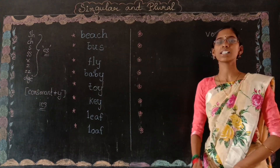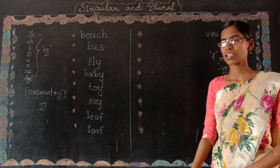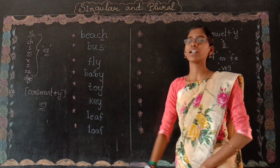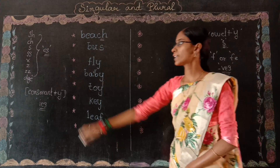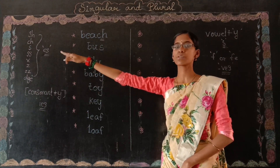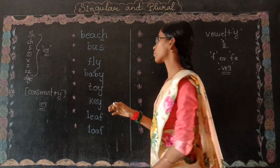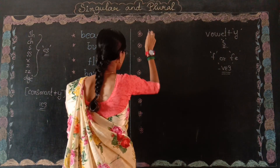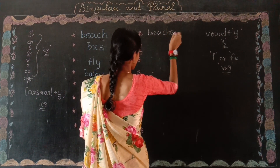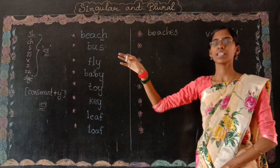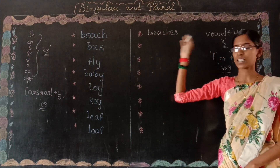See here, the first word is 'beach.' The word beach ends with CH. So according to our first rule, if a word ends with CH, you have to add ES to the word. So beach plus ES gives us 'beaches.' In singular we say beach, and in plural it is beaches.